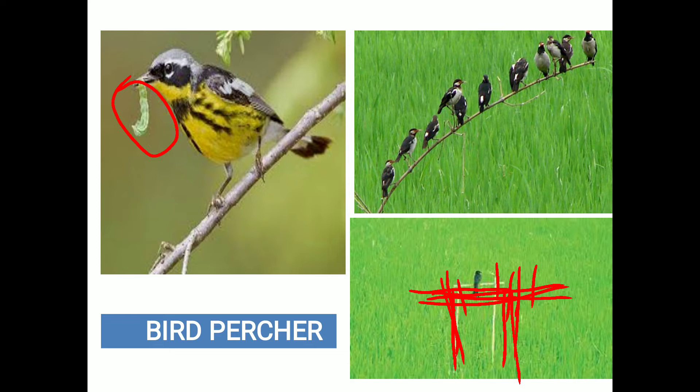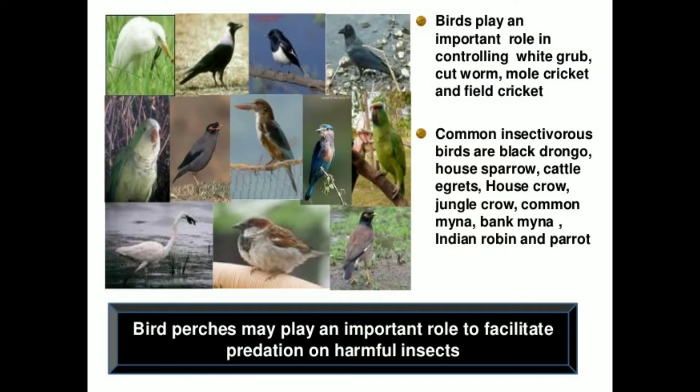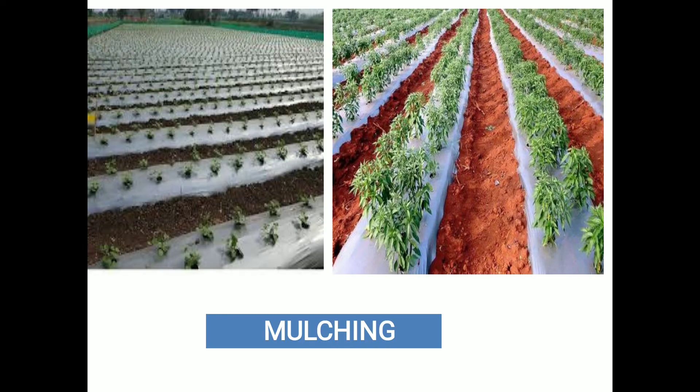The birds used are called insectivorous birds — for example, black drongo, house sparrow, cattle egret, and house crow. These birds are able to catch insects, and in that way the pest population is controlled with the help of bird perches.